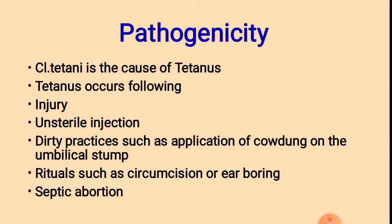Pathogenicity: Pathogenicity is the ability of the organism to cause disease. Clostridium tetani causes the disease known as tetanus. Tetanus occurs in cases of injury, unsterile injections, dirty practices such as application of cow dung on the umbilical stump, rituals such as circumcision or ear piercing, and septic abortion.